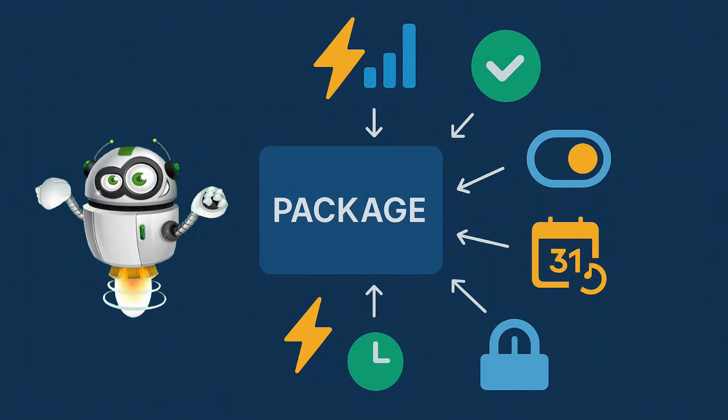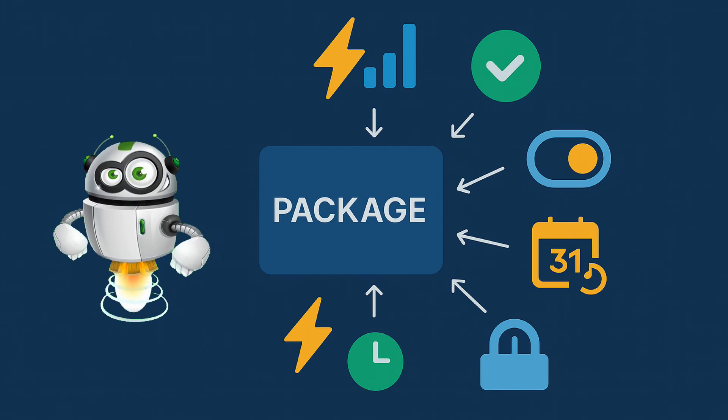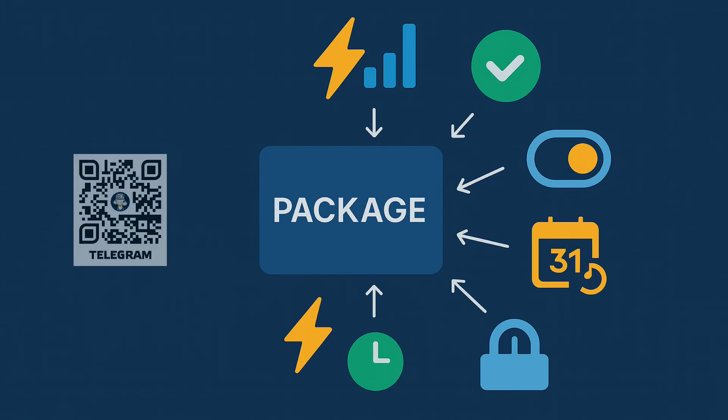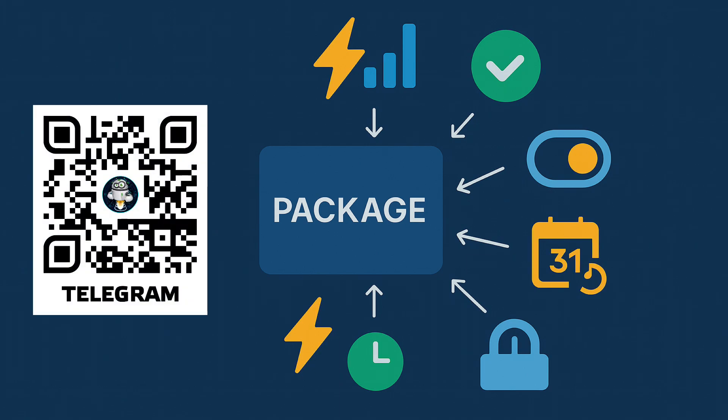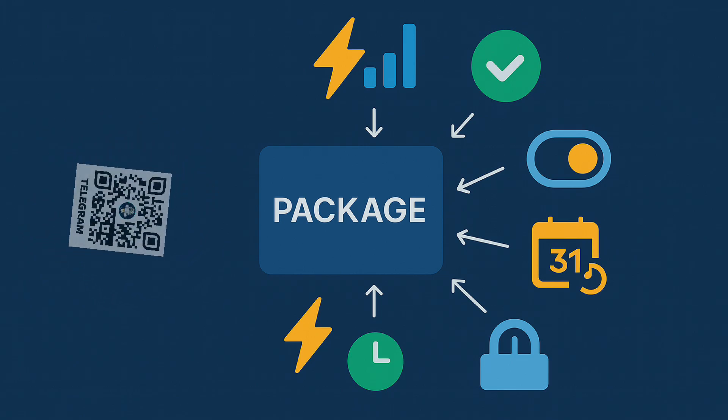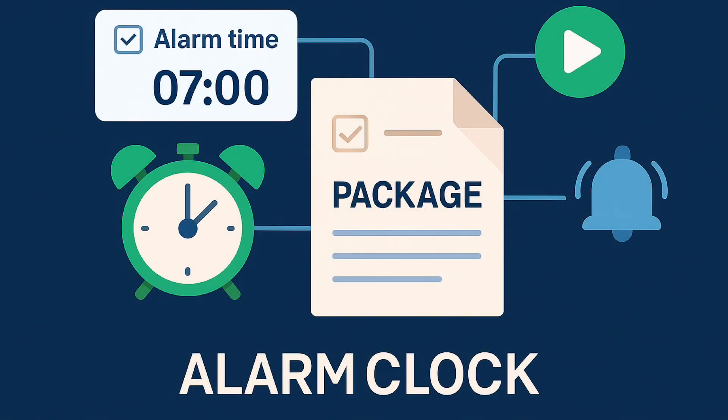A package is a complete project in the form of a single file. Everything related to one task — whether it's an alarm clock, lighting control, or a battery charging scenario — is located in one place. As an example, in my previous lesson about a smart alarm clock, in one package we store the selectors for choosing time, the automation that starts it, and the script that plays the melody — all in one file instead of being scattered across different sections of the interface.